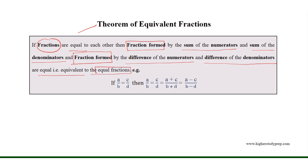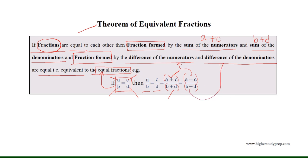That is, they are equivalent to the equal fractions. For example, if a over b is equal to c over d, where a and c are the numerators and b and d are the denominators of the equal fractions, then a/b = c/d = (a+c)/(b+d) = (a−c)/(b−d), where a+c is the sum of the numerators, b+d is the sum of the denominators, a−c is the difference of the numerators, and b−d is the difference of the denominators.